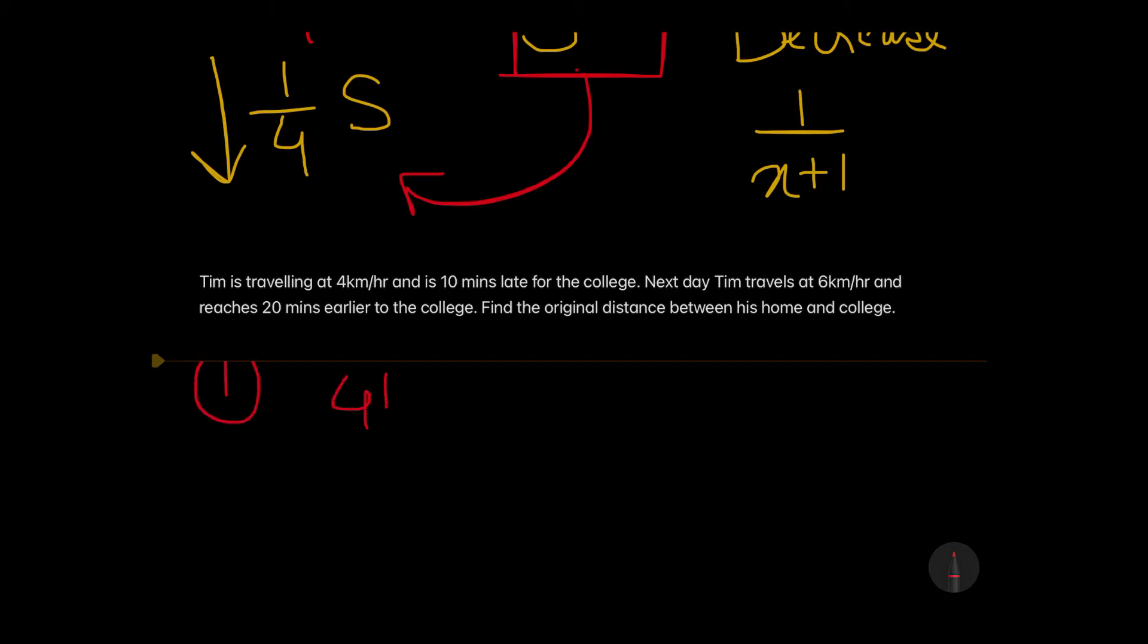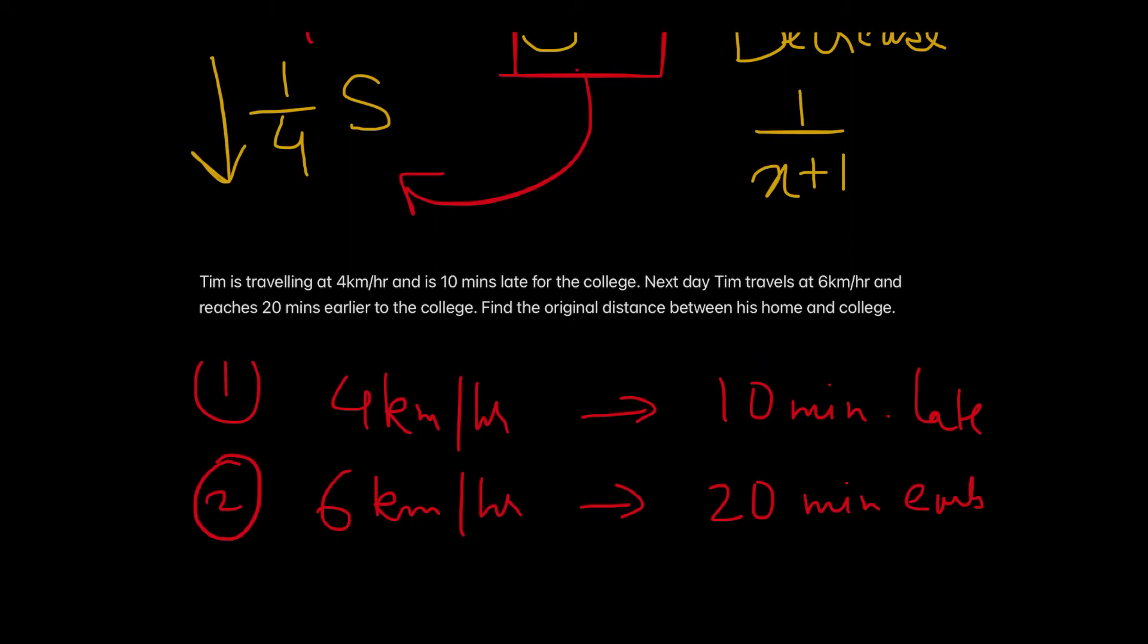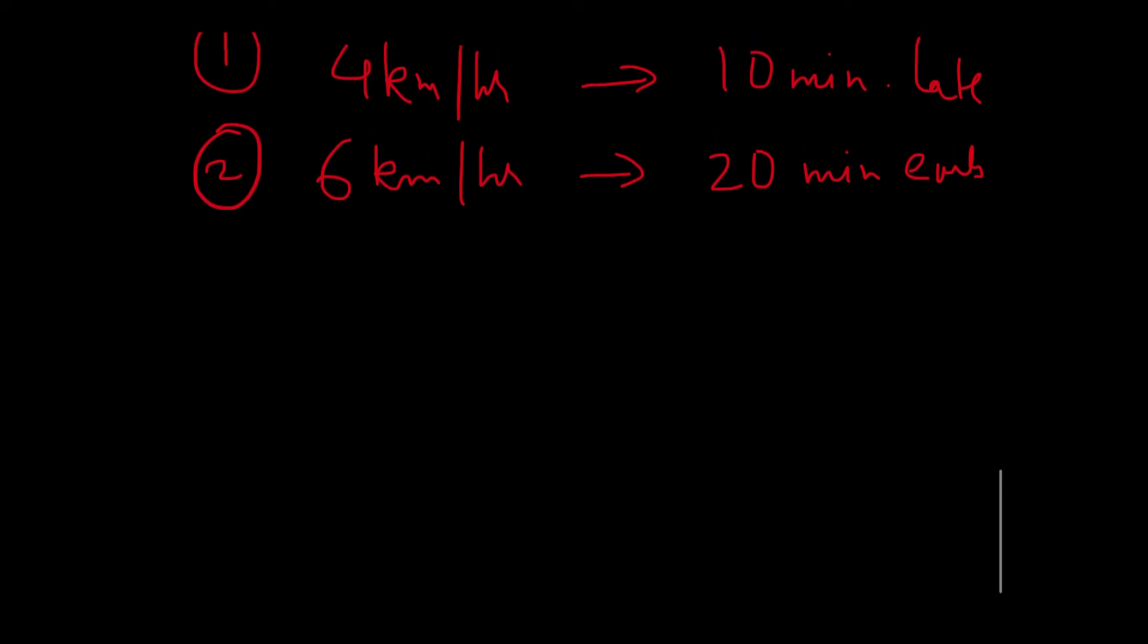In the first scenario, Tim was traveling at 4 kilometers per hour and he was 10 minutes late for his college. The second scenario is where he was traveling at 6 kilometers per hour and he was now 20 minutes earlier. So this is late and this is early. What is the time difference which you can see here? The time difference is 30 minutes.